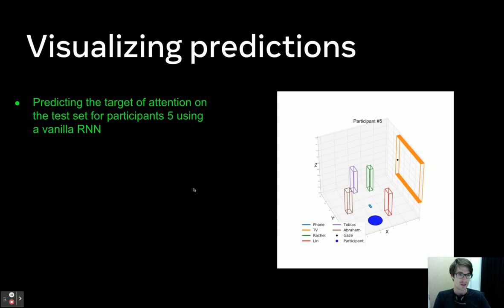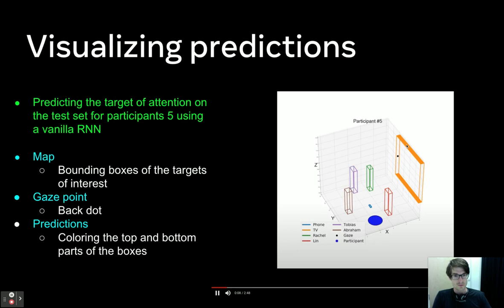We visualized the predictive performance of an RNN model for a subject. The black dot is the gaze point and the coloring of the top and bottom part of the bounding boxes shows the predicted target of future gaze. We can see that the model can predict future targets quite often. Here, for example, predicting the screen as future target and then Tobias.